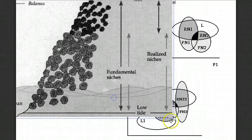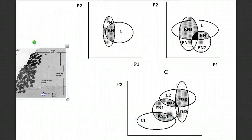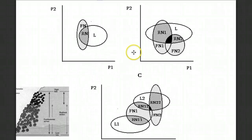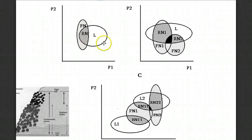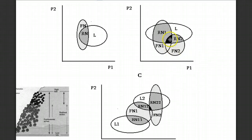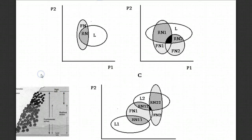Let's look at a couple of schematic diagrams to show this concept. The Fn shows the fundamental niche, Rn shows the realized niche, and L is some limiting factor that limits them to a part of the fundamental niche. It can get more complex with more species involved. In areas where niches are overlapping, we're going to have some pretty harsh competition which will direct how the species interaction plays out.